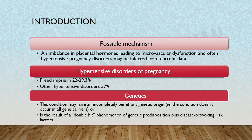This condition may have an incompletely penetrant genetic origin — meaning it doesn't occur in all gene carriers — or it may result from a 'double hit' phenomenon of genetic predisposition plus disease-provoking risk factors. The interaction of genetics and environmental factors can also play a role in the occurrence of this disease.